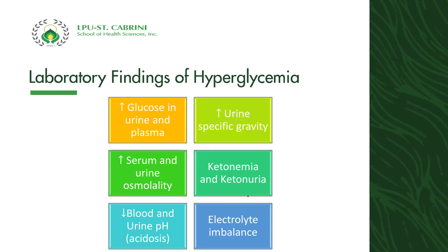Laboratory findings for hyperglycemia include: increased glucose in the urine and plasma, increased urine specific gravity, and increased urine and serum osmolality. Ketonemia and ketonuria are seen in patients with Type 1 diabetes. There is decreased blood, urine, and pH — promoting acidosis — and electrolyte imbalance. Electrolyte imbalance occurs because of polyuria: the patient urinates frequently, excreting electrolytes in the urine.